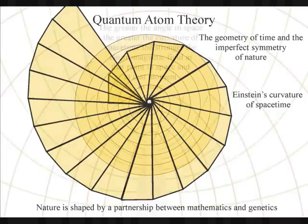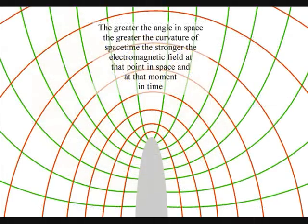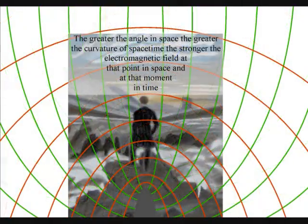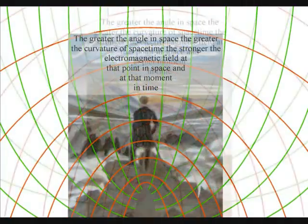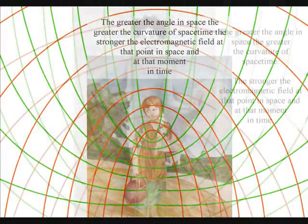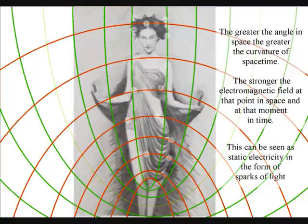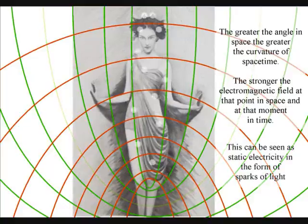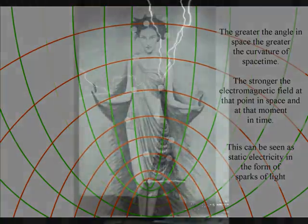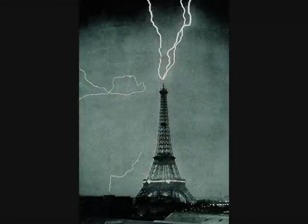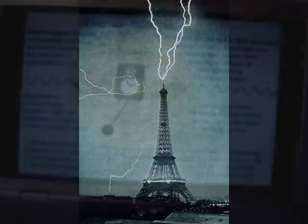The greater the angle in space, the greater the curvature of spacetime, the stronger the electromagnetic field at that point in space, and at that moment in time. This can be seen as sparks of light associated with static electricity. The atoms will even distort the geometry of spacetime, creating electrostatic discharge in the form of lightning.